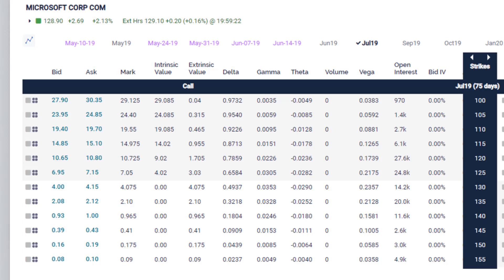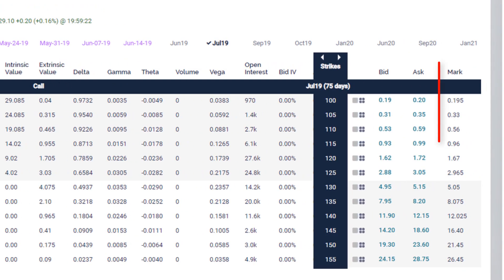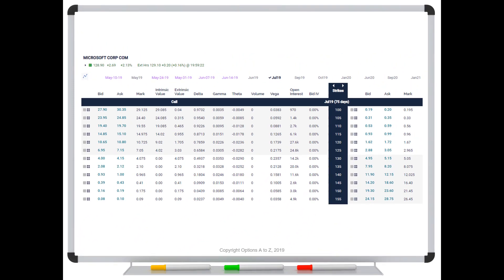They get progressively cheaper as we move toward the higher strikes. Which is to say, lower strike calls must be worth more money. Let's jump over to the opposite side of the board and take a look at the puts. Here is the mark for the puts. At the top, the 100 strike, $0.19. The 105 is $0.33. Continuing down, we've got $0.56, $0.96, $1.67, $2.96. Look at this. $5, $8, $12, $16, $21, $26. You're going to notice that your call options are going to get more expensive as you move in this direction toward the lower strikes, and your put options will get more expensive as you move in this direction toward the higher strikes.